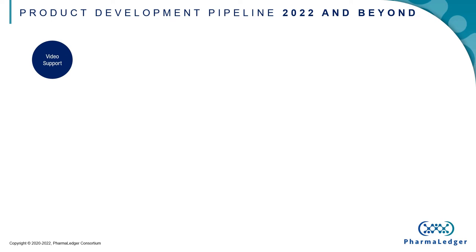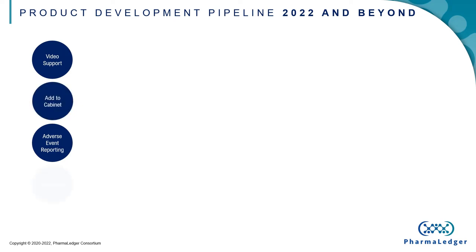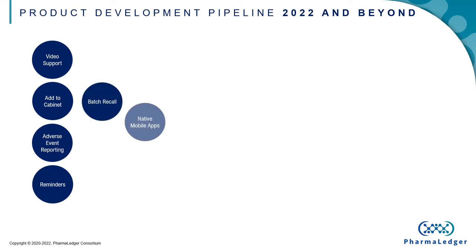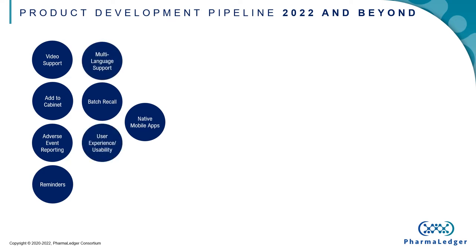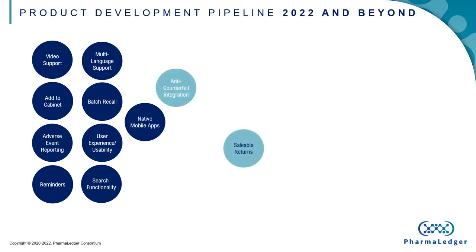This actually raises an interesting question as to how the video content would be approved by the regulatory authorities, or if indeed it needs to be approved at all. As Sonia mentioned during the demo, we're looking at developing the ability to perform adverse event reporting and also the add-to-cabinet functionality. The thought behind the adverse event reporting is twofold: first, to make this process much easier for the end user; and second, since we have scanned the barcode on the pack, we can provide much more details automatically such as the batch number, the expiration date, the product code, or even the serial number.